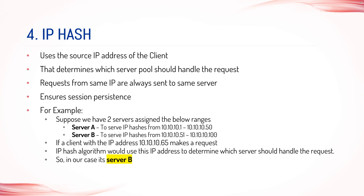4. IP Hash. IP Hash uses the source IP address of the client to determine which server in the pool should handle the request. For example, if a client with any IP address makes a request, the IP Hash algorithm would use this IP address to determine which server should handle the request. We have two servers with the IP address ranges defined as shown. In our example, server B is assigned to handle that request as it falls within a specific range. Based on our algorithm, all subsequent requests from that IP address will be sent to server B.